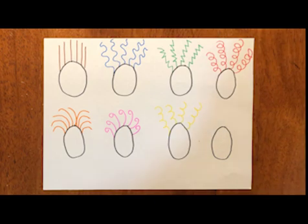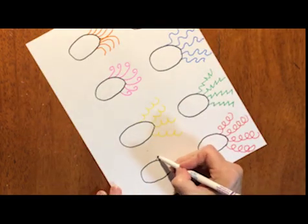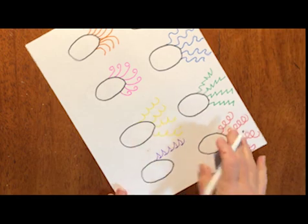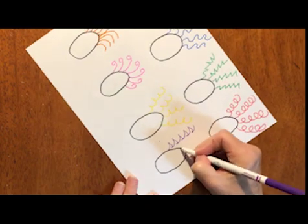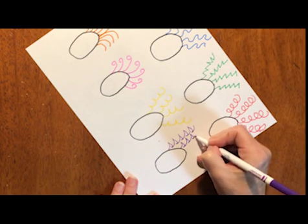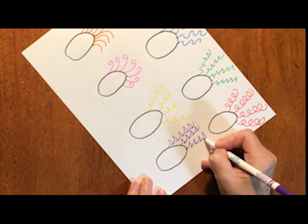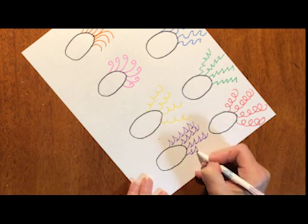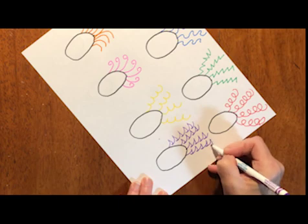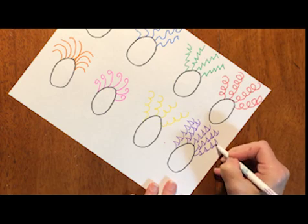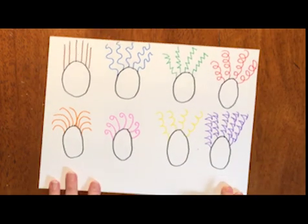And our last one is going to have the hair that looks like the waves. Now I'm going to turn my paper because I think it would be better for me to do this a different way. So I'm going to do waves like this. And then another one. Give me one more. Okay, there's our silly hair.